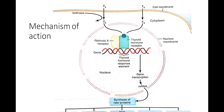The mechanism of action of thyroid hormones: T4 and T3 are lipophilic, so they can cross the cell membrane easily. Inside the cell, T4 is converted to T3 by deiodinase. T3 then crosses the nuclear membrane and binds to its receptor — the thyroid hormone receptor — which is present in the nucleus.